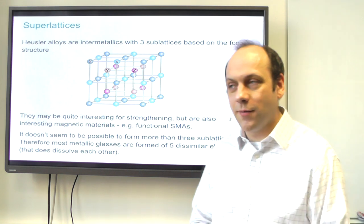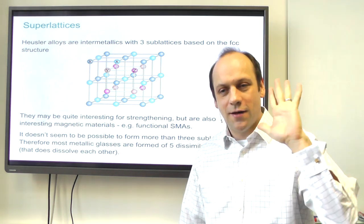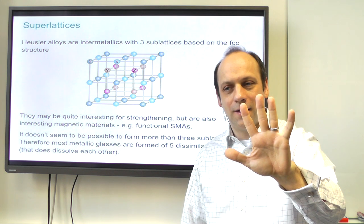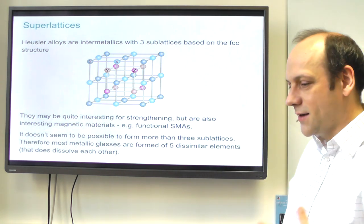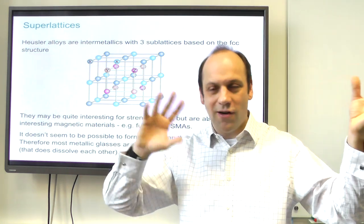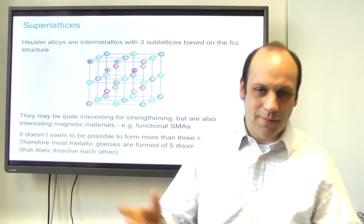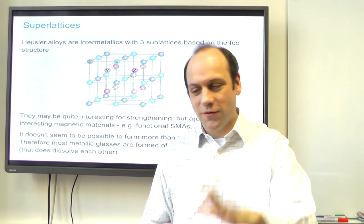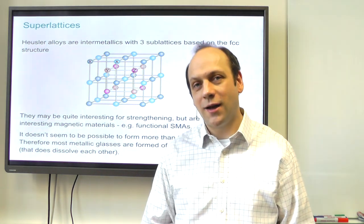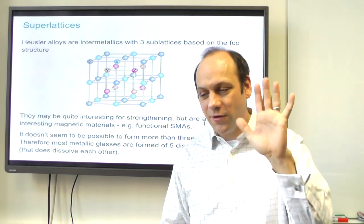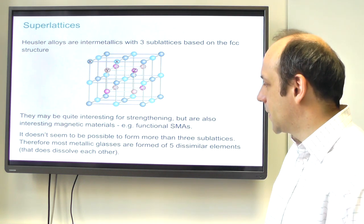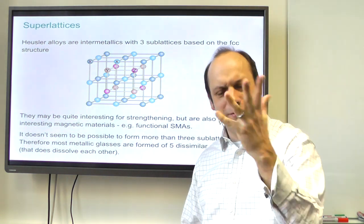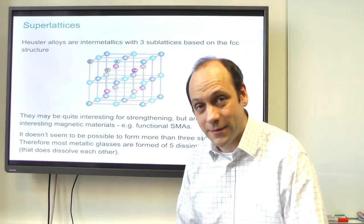This leads to the question: what if you take five elements that don't want to form solutions with each other? They can't form five different sublattices, so the argument goes that they will just form one big FCC-ish amalgam — called a high entropy alloy. In the metallic glass community, if you have five dissimilar elements that don't dissolve each other they will tend to form metallic glasses more easily. They do dissolve in the liquid, but when quenched they won't form crystal structures because they don't know how to form five sublattices, so they just stay in a glassy state.